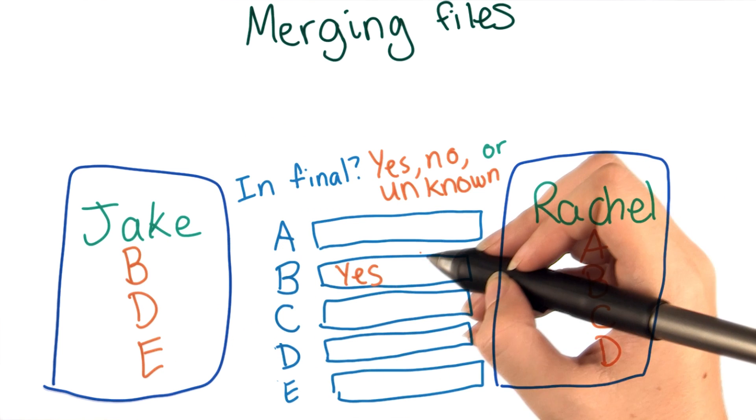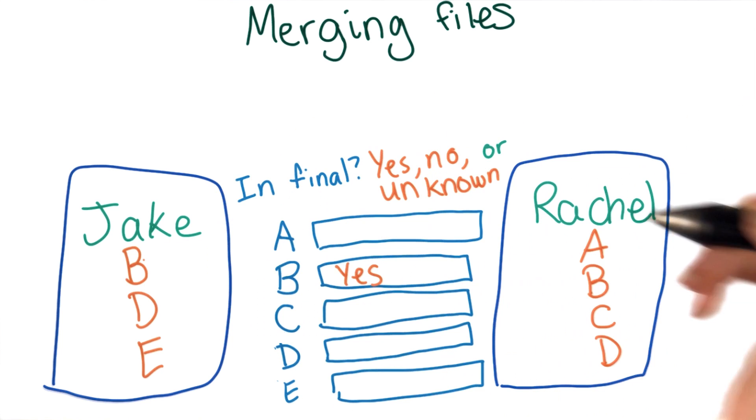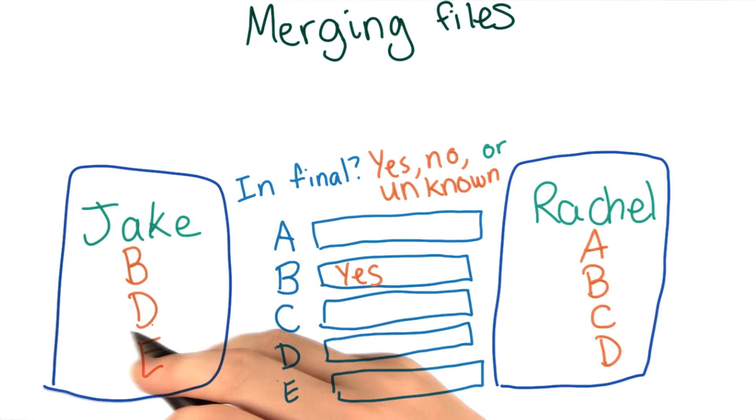It may have been there at the beginning of the day and neither of them removed it, or possibly both Jake and Rachel added it independently. Either way, we definitely want it. The same thing is true for D.